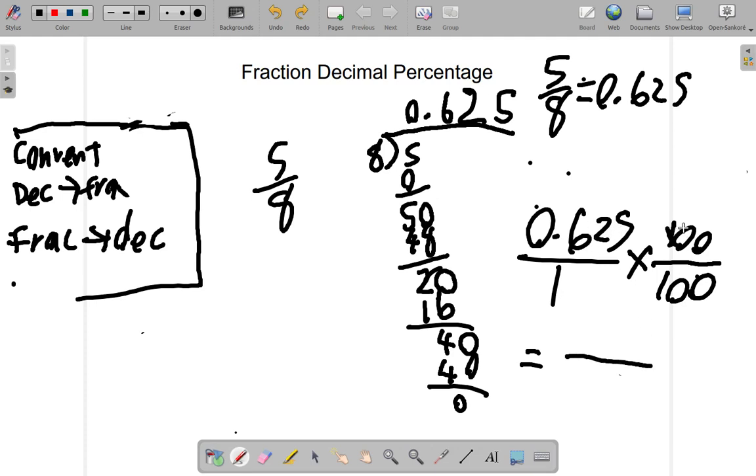So 0.625 out of 1 is the same as 0.625 times 100 is 62.5, and 1 times 100 is 100. So this is 62.5 per 100, per cent.